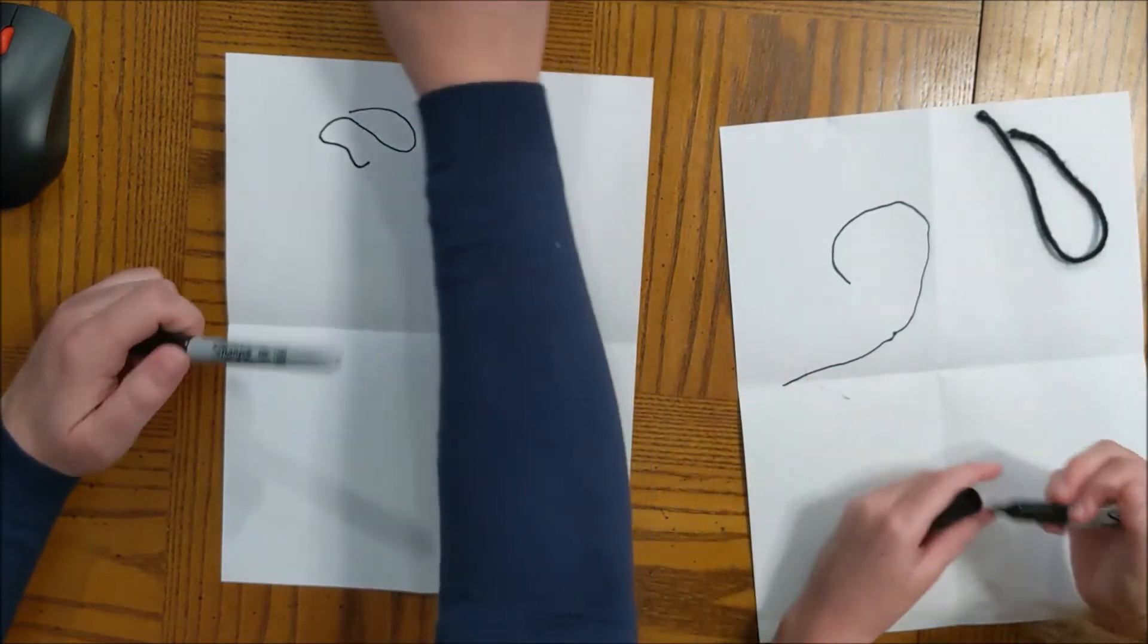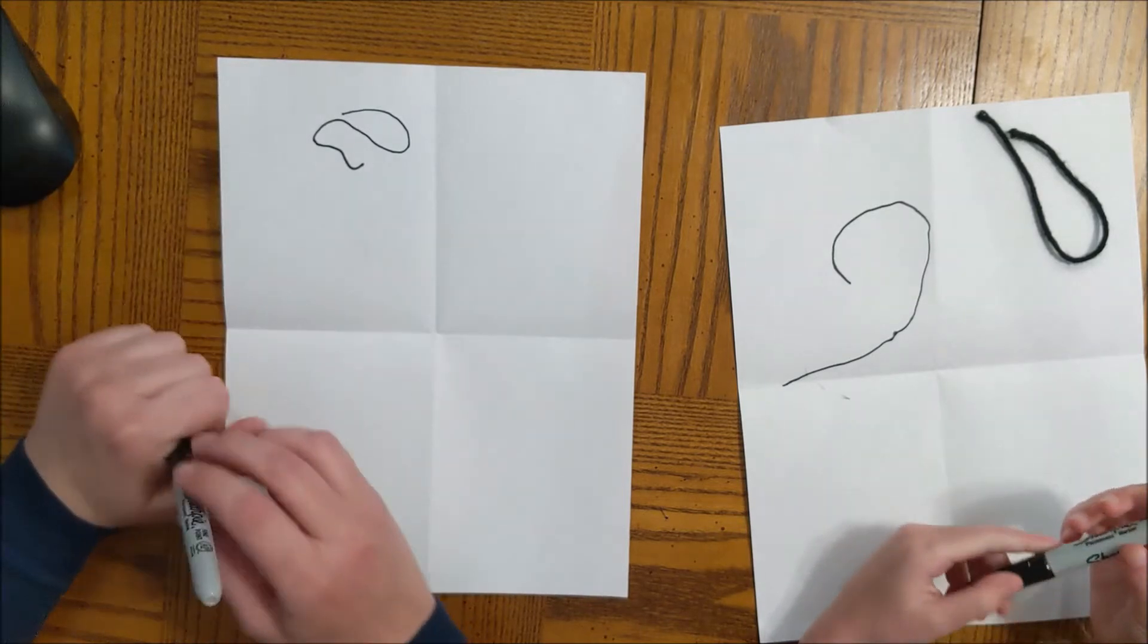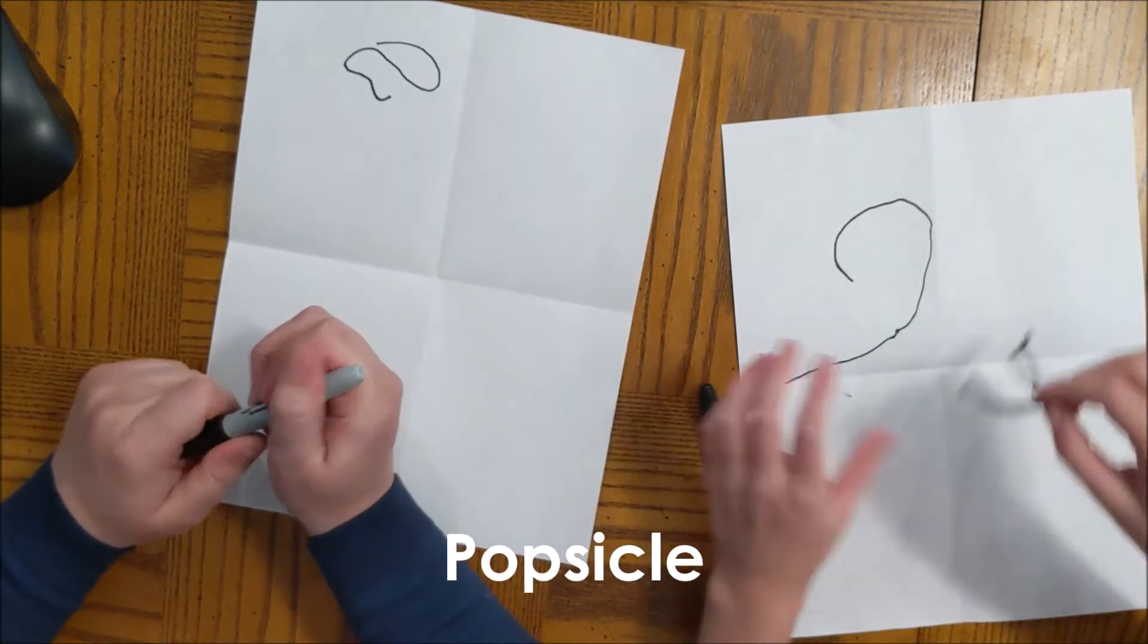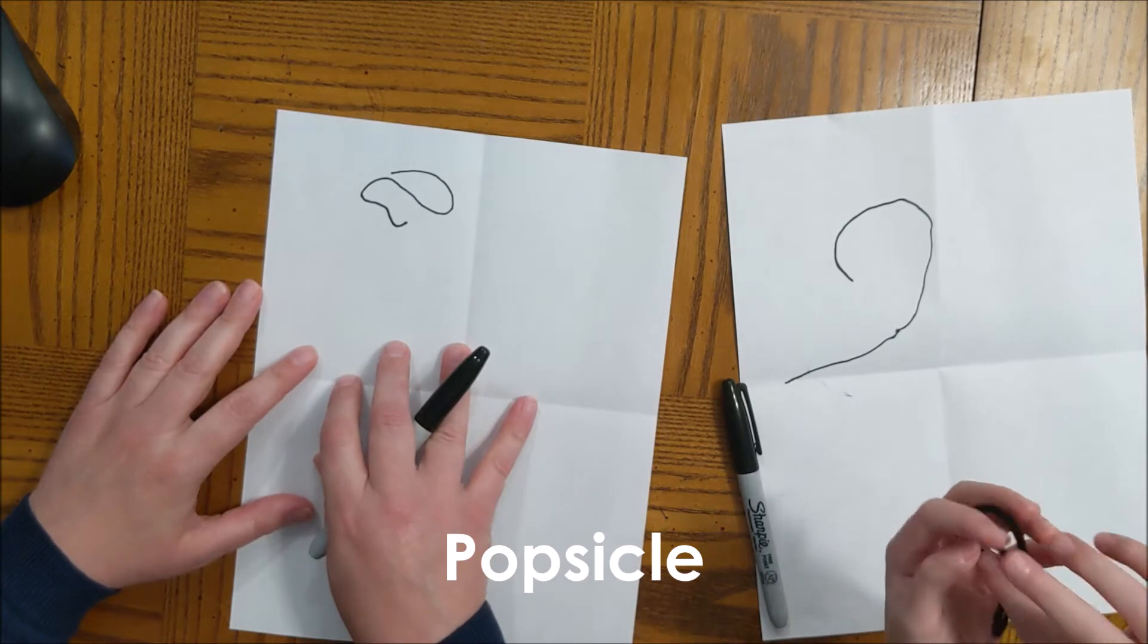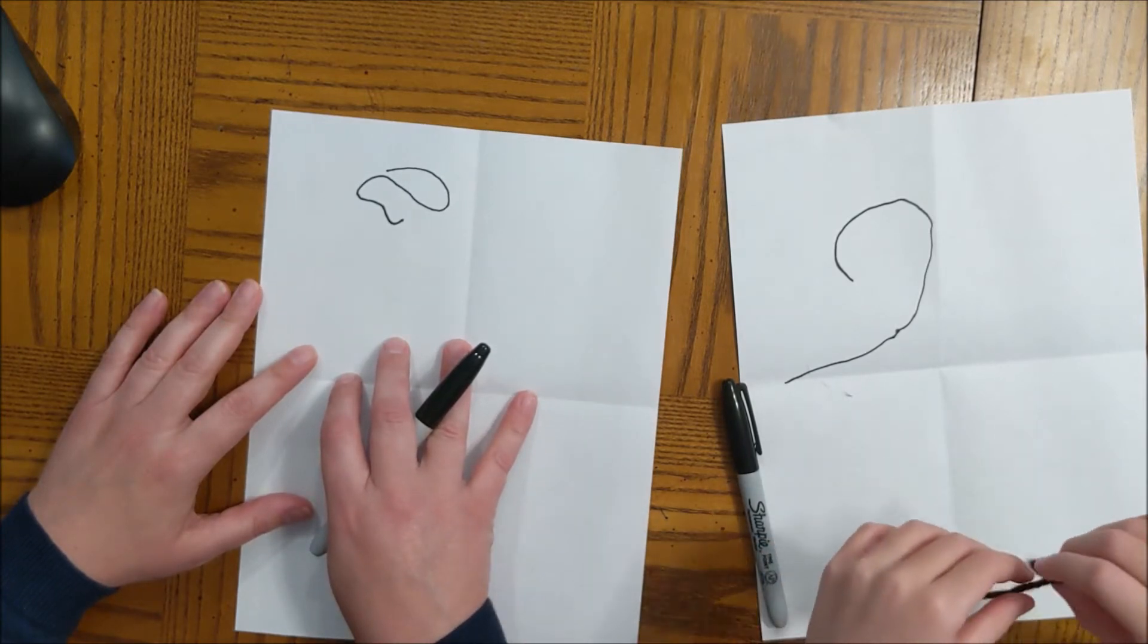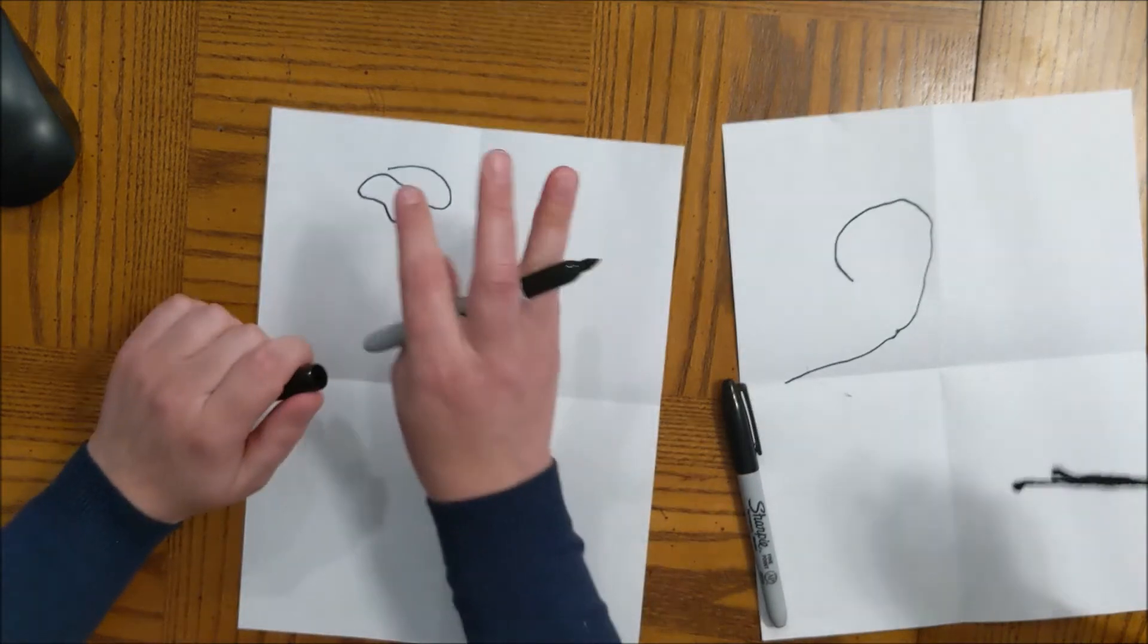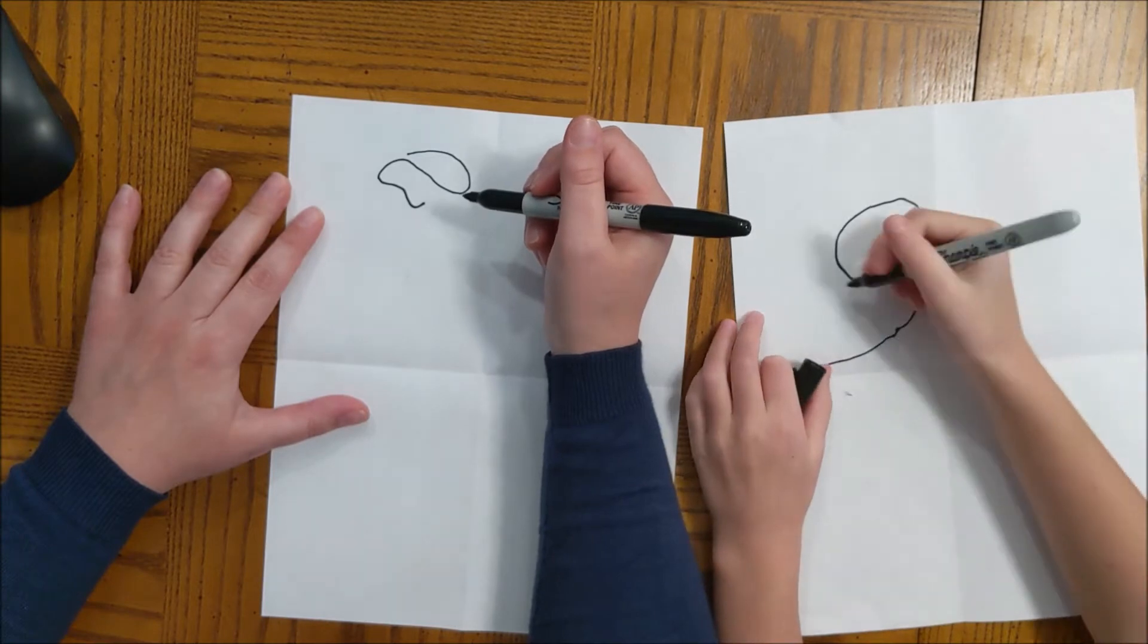Now I'm going to do my word generator. I'm going to get a new word and it says popsicle. So this is kind of a challenge, but somehow we're going to turn our squiggle into a popsicle. Are you ready, Clara? Okay, we're going to try really hard to turn this squiggle into a popsicle.